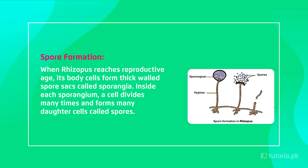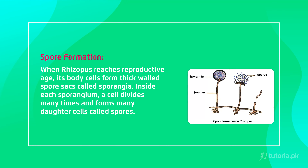Inside the sporangium, the cell divides many times, producing multiple daughter cells that we call spores. These spores then disperse — they travel to other surfaces and land in different places.